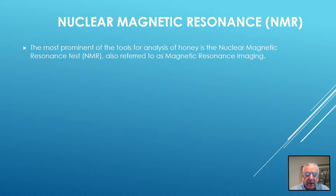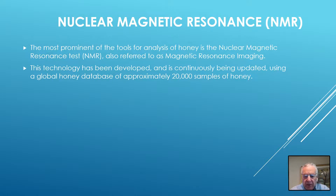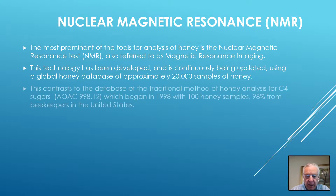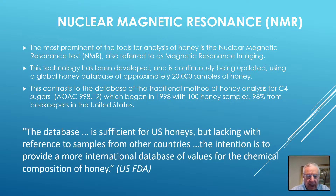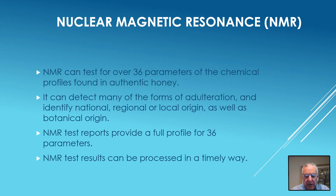Nuclear magnetic resonance, or NMR, is among the most prominent tools used for the analysis of honey. This technology has been developed and is continuously being updated. It has approximately 20,000 samples in the global database of honey, in contrast to the database of traditional methods used 20 years ago, which had only 100 samples, 98% of which were from beekeepers.